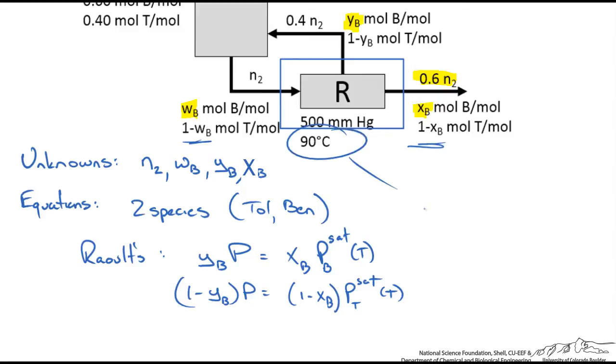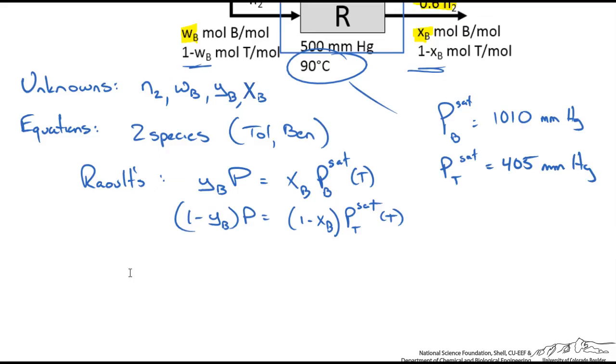We would look these up or use the Antoine equation. P sat of benzene equals 1010 mmHg, and the vapor pressure of toluene at 90 degrees Celsius is approximately 405 mmHg. Now we can plug in the vapor pressures, we know the total pressure which is given as 500 mmHg, and we can solve for YB and XB. I get YB equals 0.317 and XB equals 0.157.